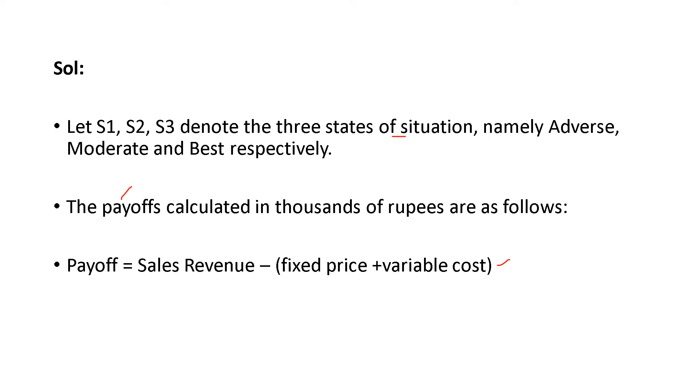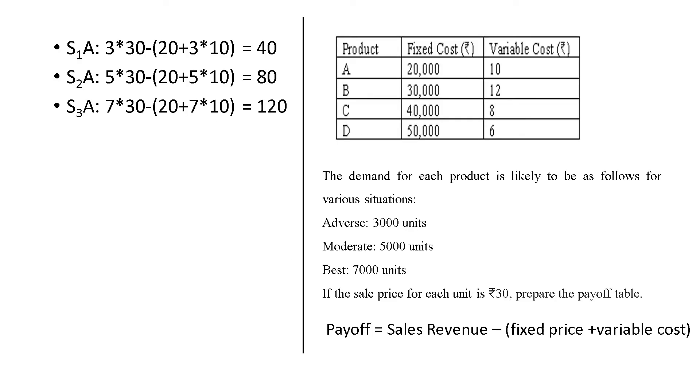We are having the table, A, B, C, D products, fixed cost and the variable cost, and we are having the demands and the formula. We know that the payoff table will be having rows and columns. Here, the strategies are S1, S2 and S3. And the actions are A, B, C and D.